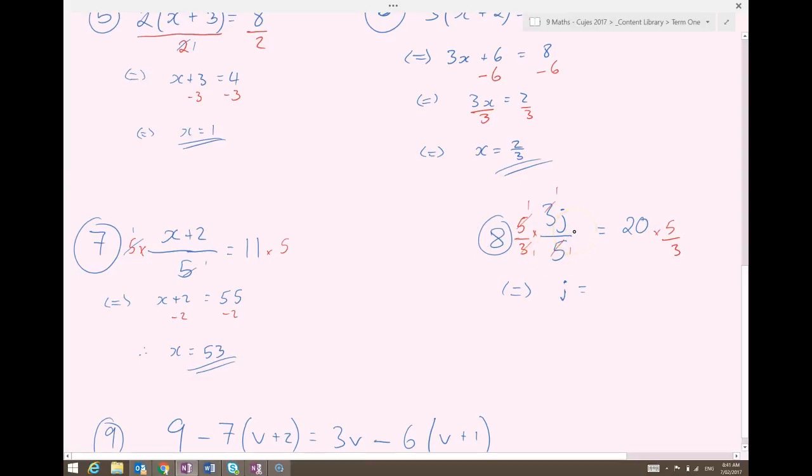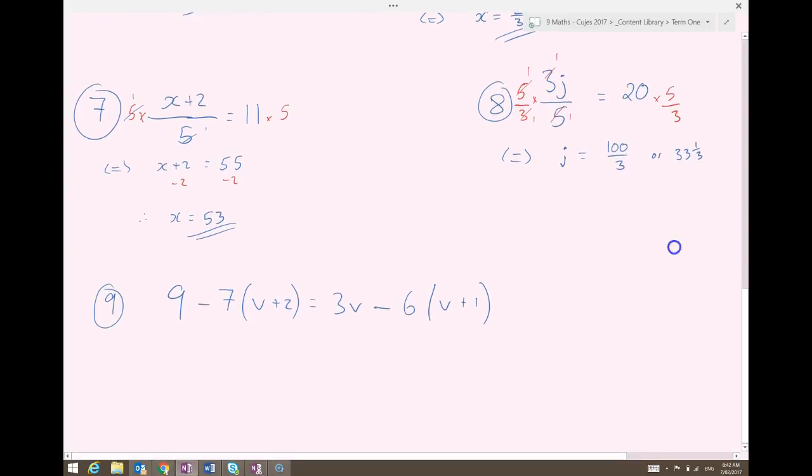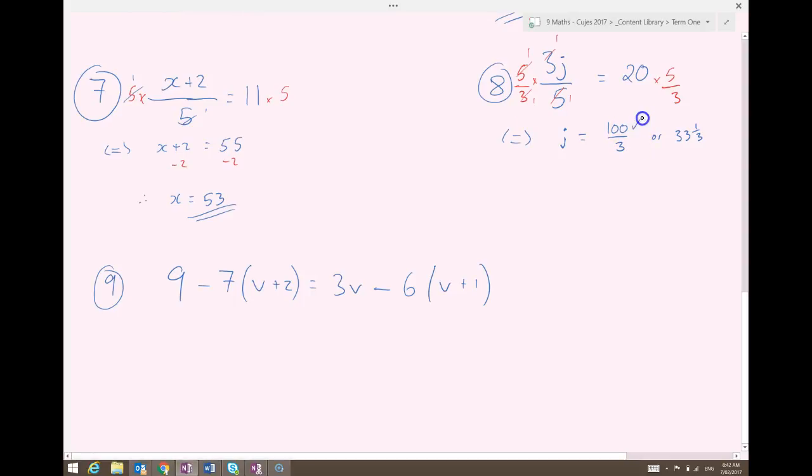Of course you could multiply by 5 and then in the next line divide by 3. But I think doing it all at once is easier. 20 times 5 over 3 is just going to be 100 over 3. As far as I'm concerned, that's a beautiful answer. You can leave it like that. If you want to simplify it into a mixed number, you can. But as you move up in high school, you're going to find that improper fractions are preferable because they're much easier to substitute into other equations. So leaving it as an improper fraction is just fine by me.